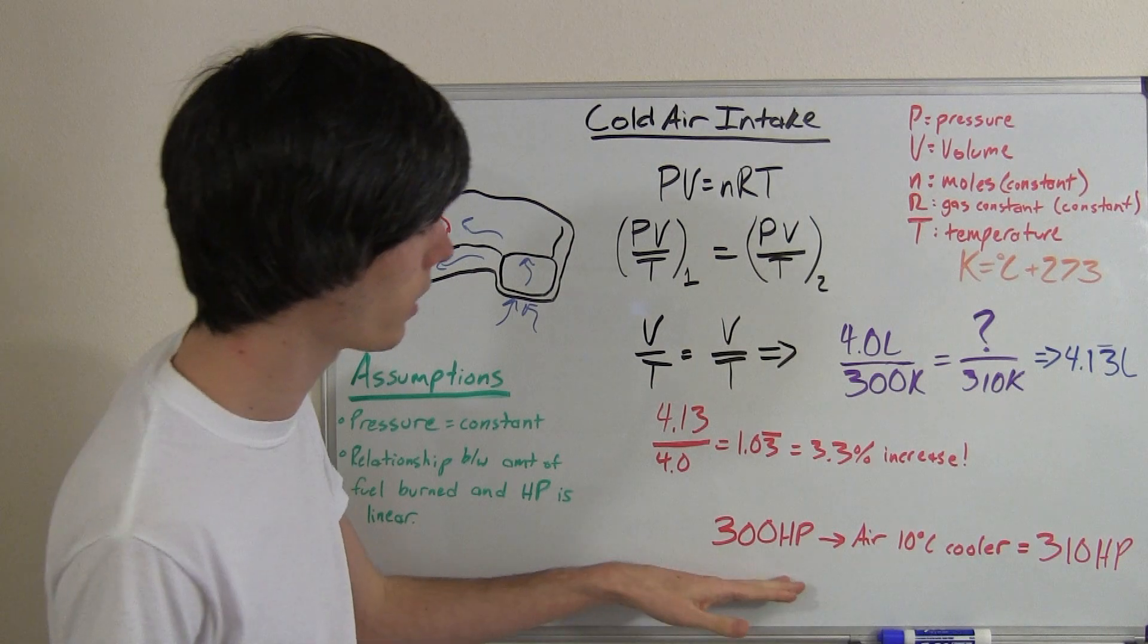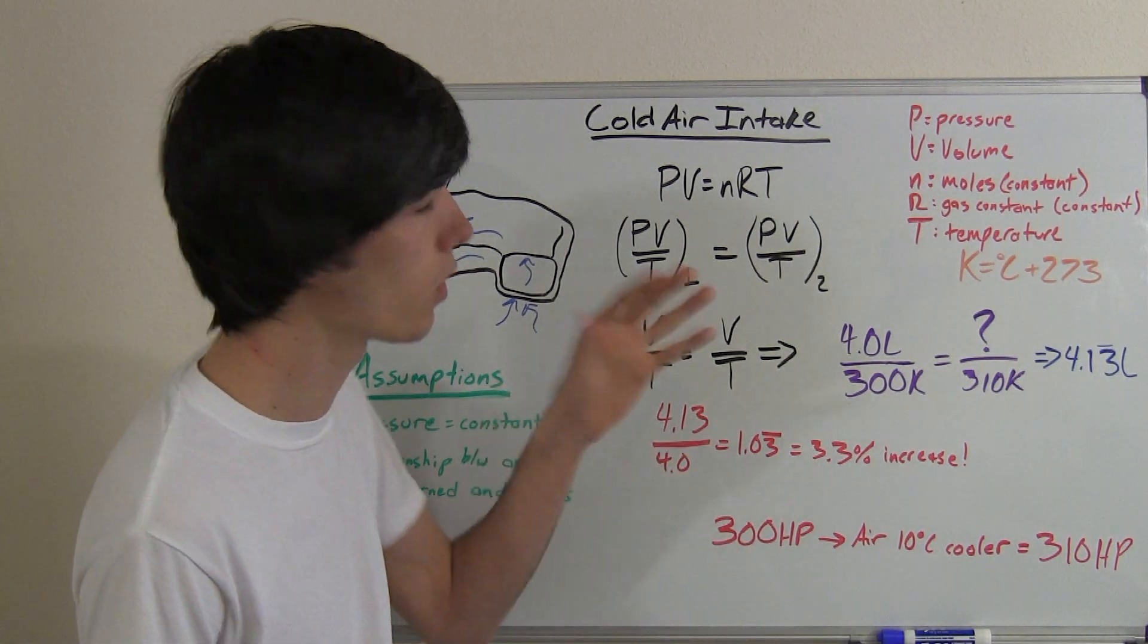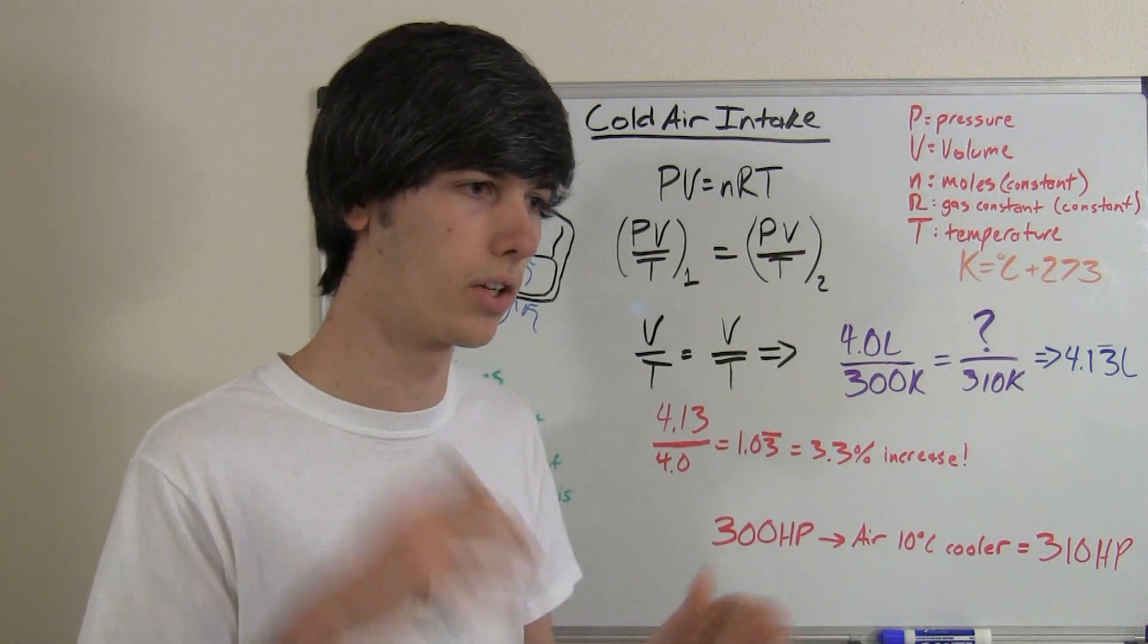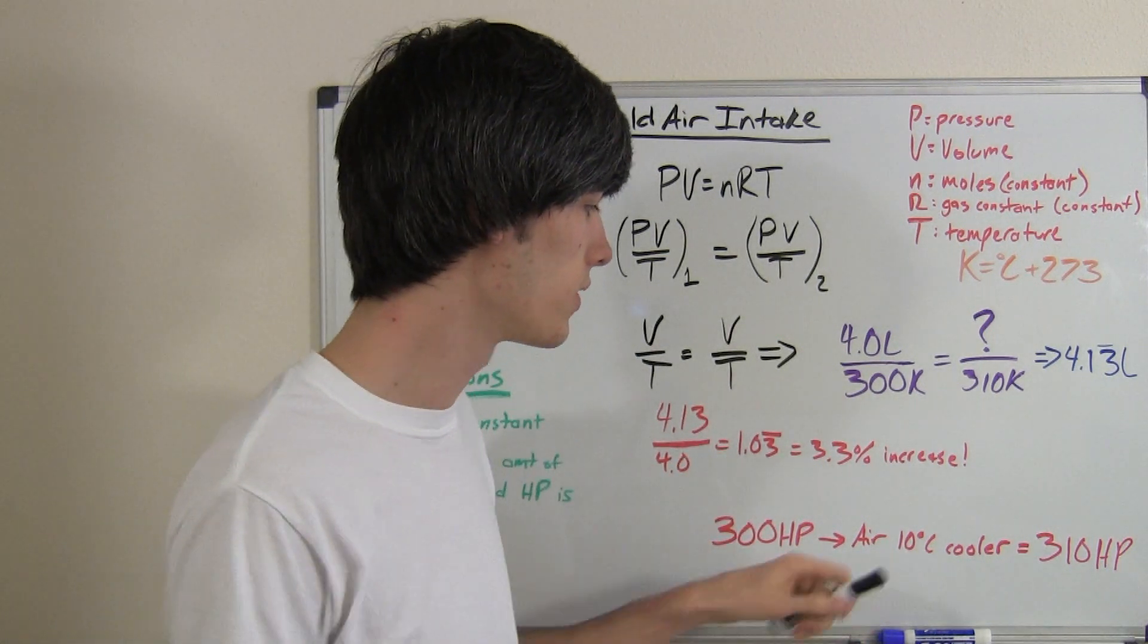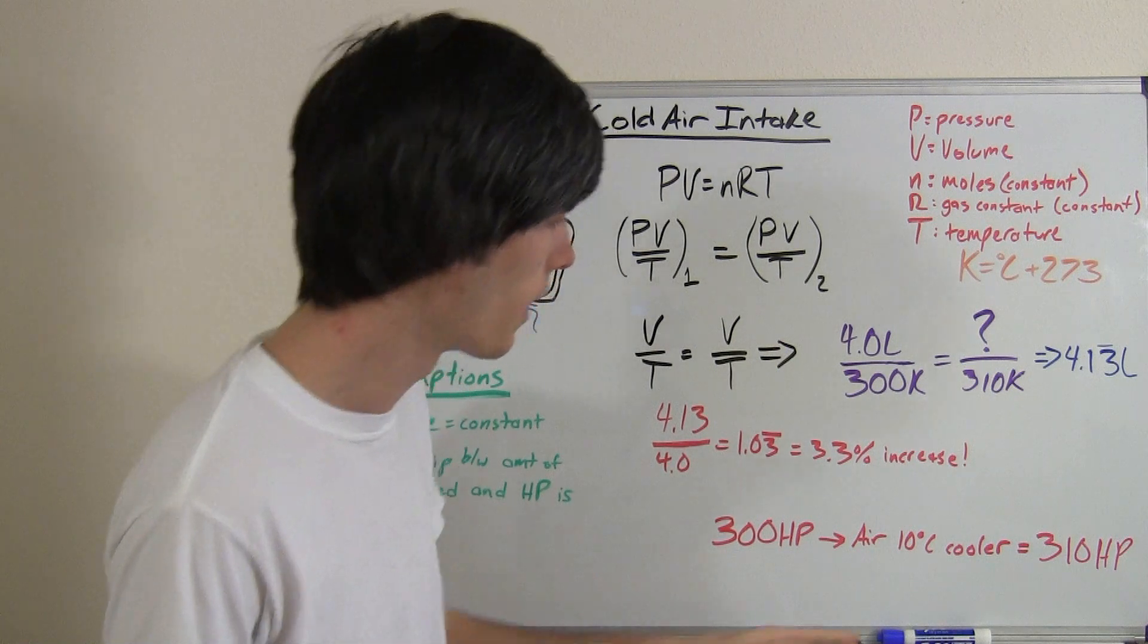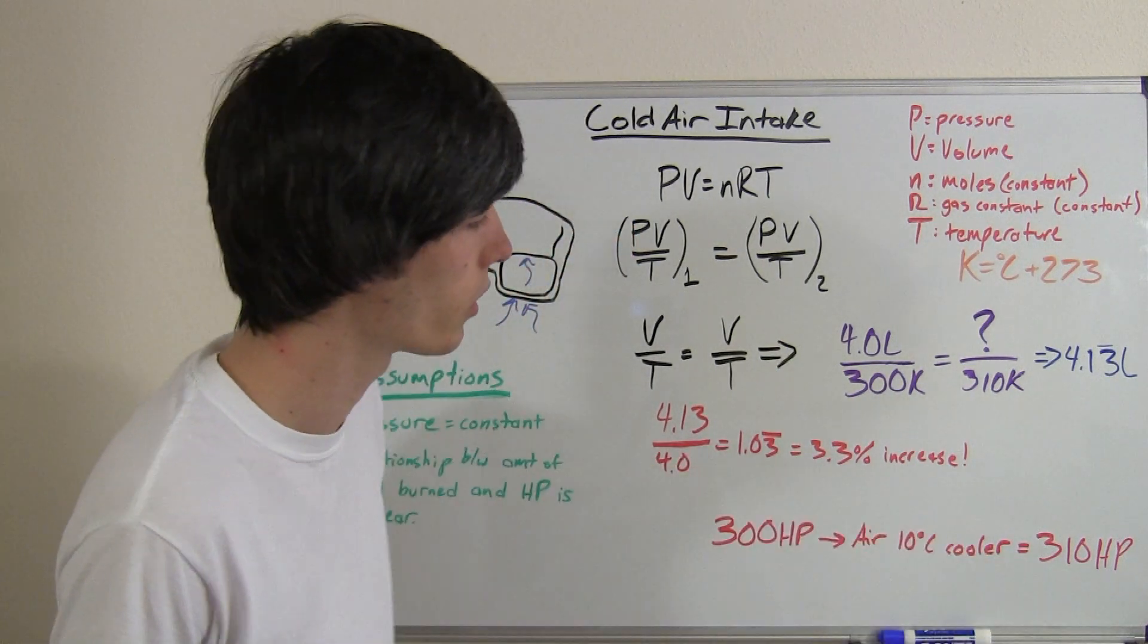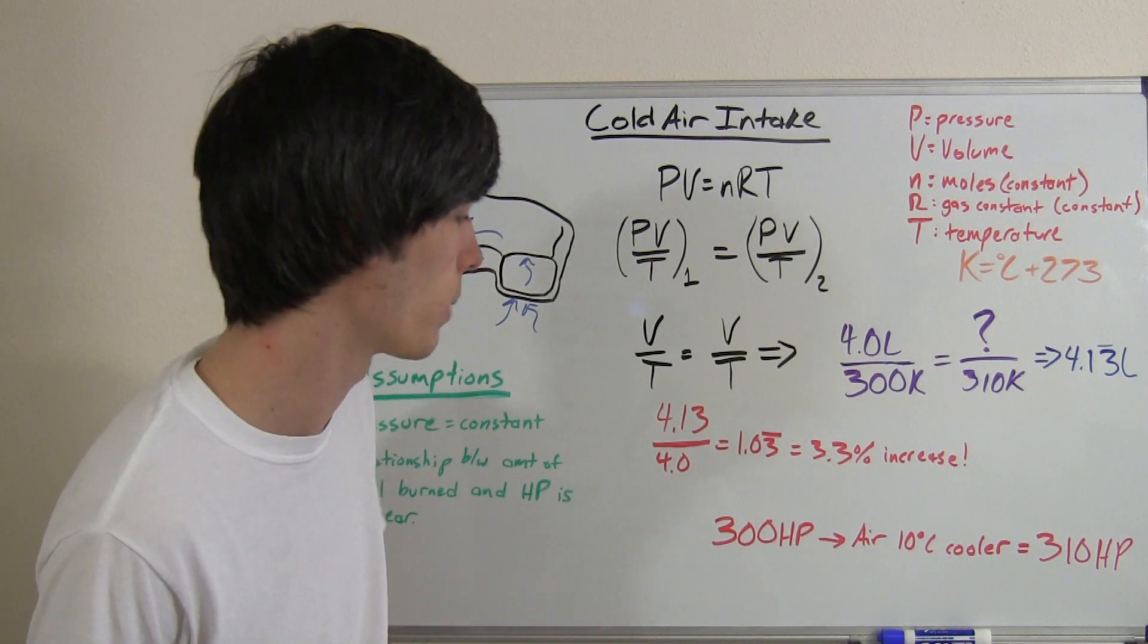So if you have a 300 horsepower engine, and your cold air intake manages to keep the temperature of the air coming into the engine, going directly into the cylinder, 10 degrees Celsius cooler, then you could actually produce 310 horsepower, a 3.3% increase.